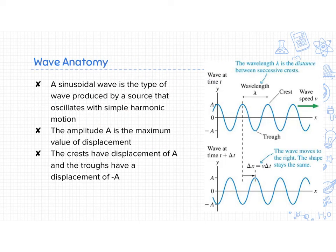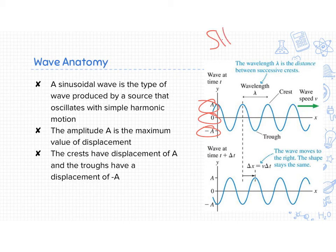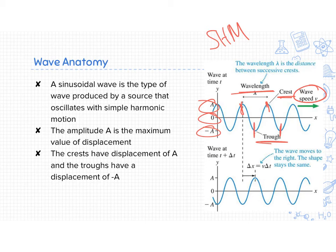When looking at wave anatomy, we always look at sinusoidal waves. We've already talked about the resting point and amplitude — the wave oscillates back and forth between the amplitude and the negative amplitude, from simple harmonic motion. A few other things: the crest is the highest point in the wave, and the trough is the lowest point. The wave travels with some velocity we already discussed. The wavelength is the distance from crest to crest, or trough to trough. The amplitude is the maximum displacement.